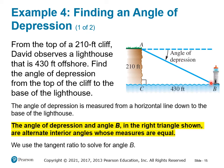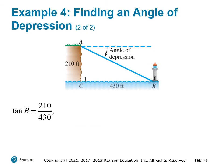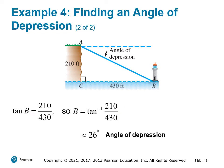Looking at angle B, we have the opposite side of 210 and the adjacent side of 430, so we use the tangent function. Taking the inverse tangent of 210 over 430 gives an angle of 26 degrees, which is the angle of depression. That's the end of today's lecture — hopefully this is helpful and I'll see you in the next one.